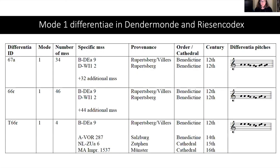The final mode 1 differentiae is found in only four manuscripts and follows the same pattern of Benedictine and cathedral usage, with Münster — getting closer to north German — and another Low Country connection with Zutphen.